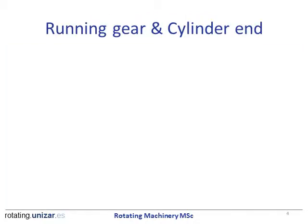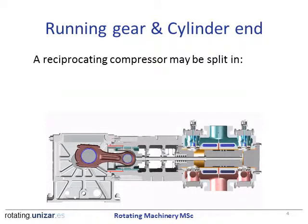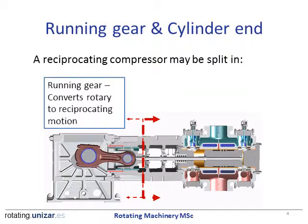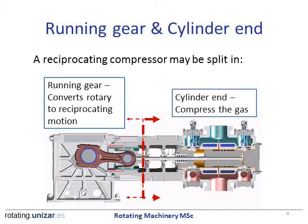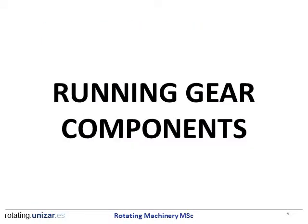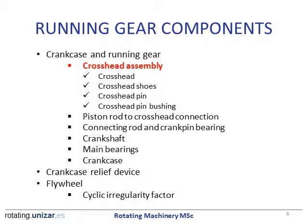Going back to the typical cross section of the compressor, we will focus on the running gear, which is the left part of the machine — everything from the crosshead to the left. So it is the crosshead, the connection of the crosshead to the piston rod, the connecting rod, the crankshaft, the frame, and also the bearings associated with that. We will start on the running gear from the crosshead and move from the crosshead to the crankcase.